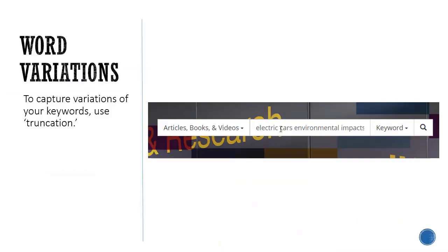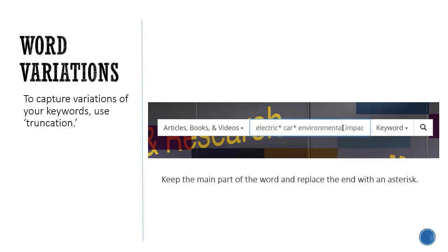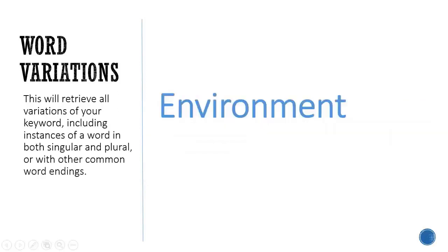To capture variations of your keywords, use truncation. To truncate, keep the main part of the word and replace the end with an asterisk. This will retrieve all variations of your keyword, including instances of a word in both singular and plural, or with other common word endings.